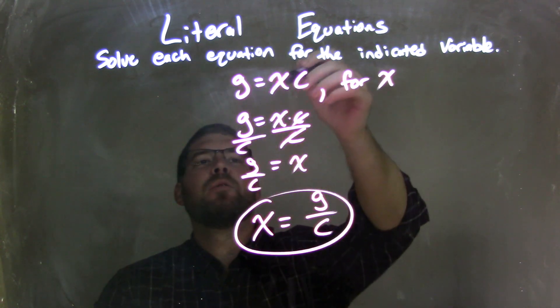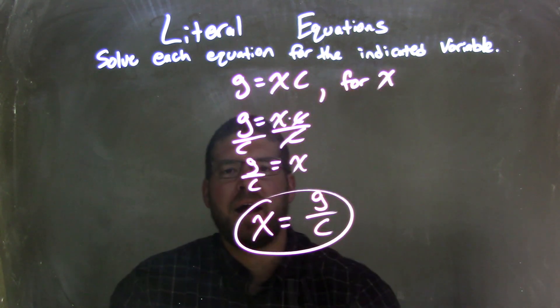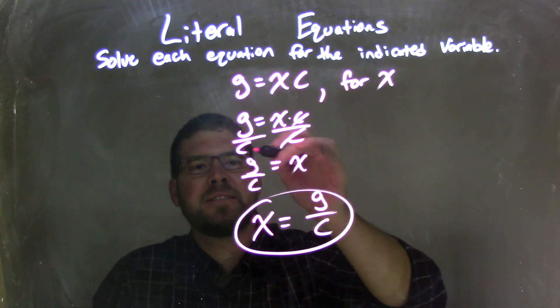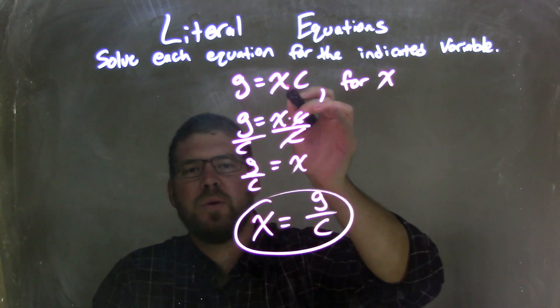So let's recap. We have g equals x times c, and we need to solve that for x. When I rewrote my equation, I then divided by c on both sides, because there's multiplication between the x and the c.